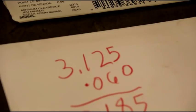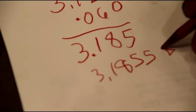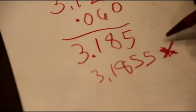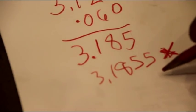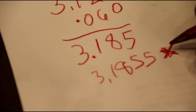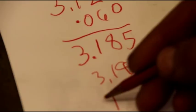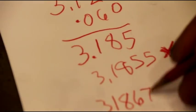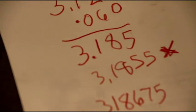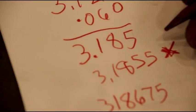I like to take the piston size and add two and a half to two and three quarter thousandths to the size. So what I'm shooting for here is 3.185 to 3.185 and a half, and that's how I like to fit my pistons. And this is the number we're shooting for on our honing.